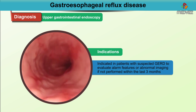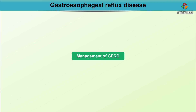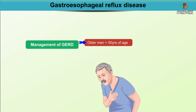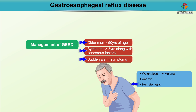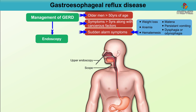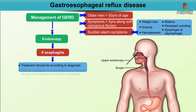Older men above 50 years of age with symptoms more than five years, along with cancer risk factors or alarm symptoms like weight loss, anemia, hematemesis, melena, persistent vomiting, dysphagia, or odynophagia, should undergo an endoscopy. On endoscopy, if there is esophagitis, treatment should be according to the diagnosis, and a deeper evaluation to understand the underlying cause of esophagitis should be mandated.